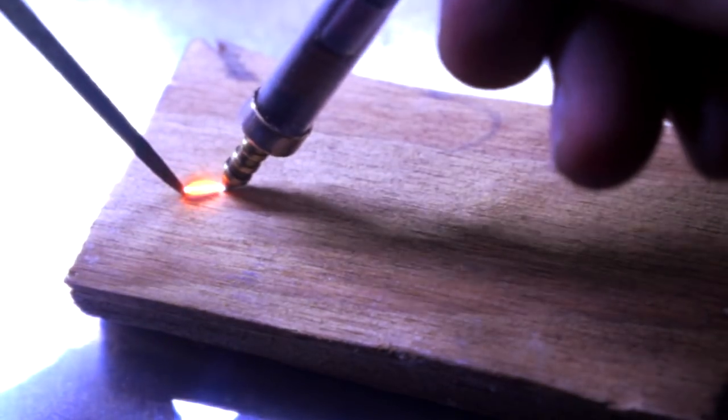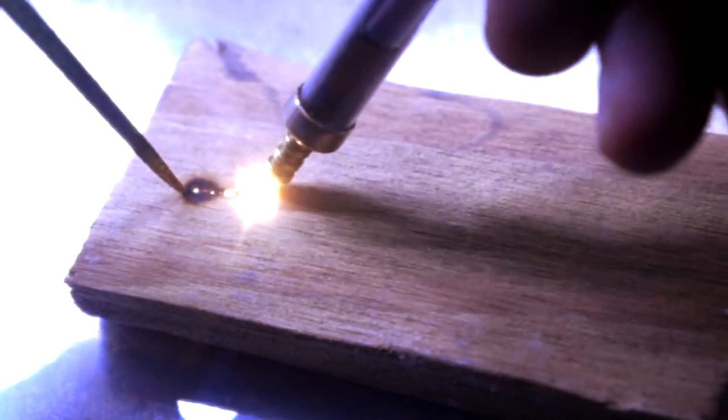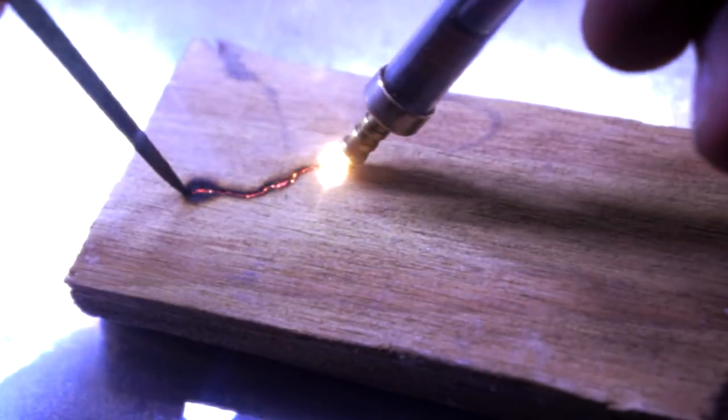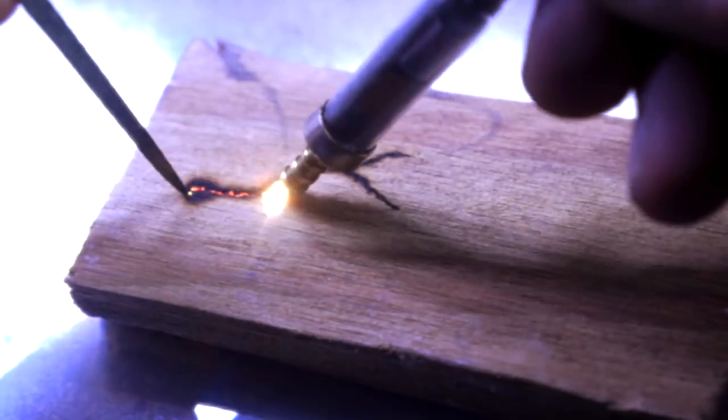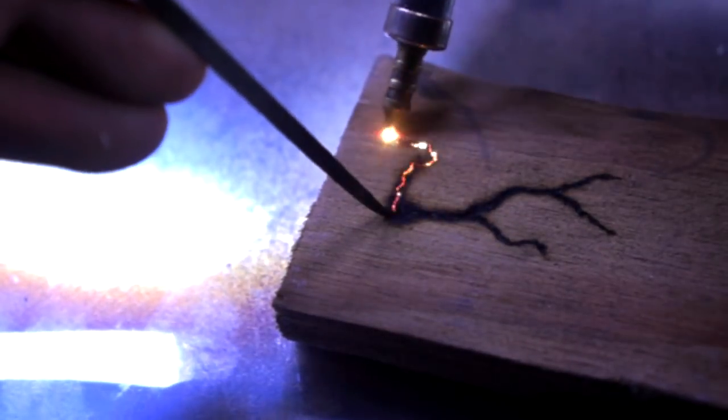These plasma pens are awesome at wood burning, allowing the creation of a fine burned line up to 2 inches long. The only downside is the fairly short battery life of just a few minutes, but the good thing is they charge fast, so that's not a problem.